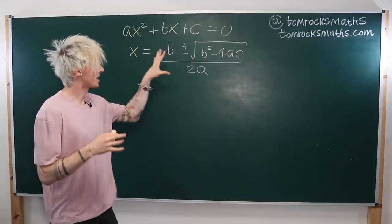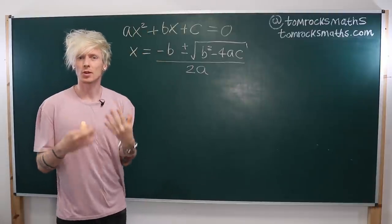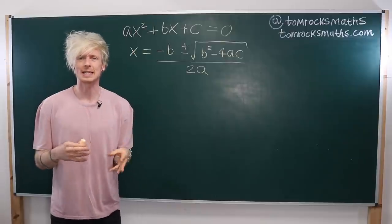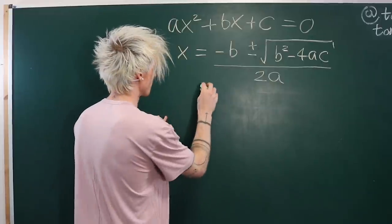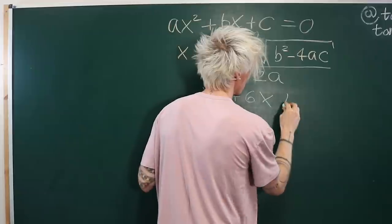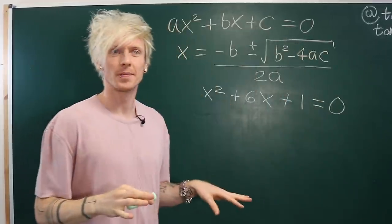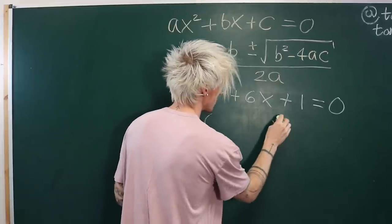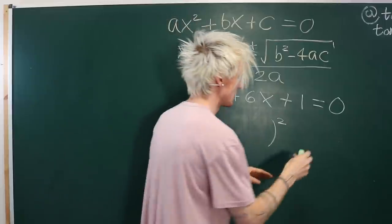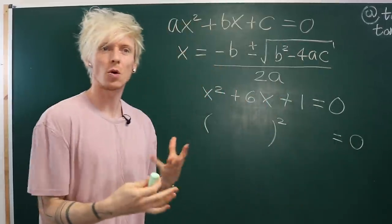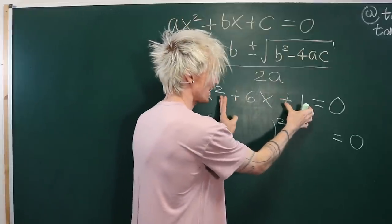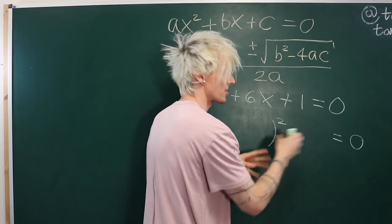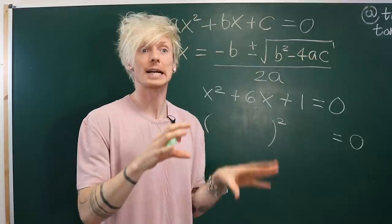But what we want to think about here is where this actually comes from. Can we derive this formula starting from a general quadratic equation? And the answer of course is yes! In order to do this we use a method called completing the square. The method requires us to write something squared plus or minus something equal to zero — you take your quadratic and write at least part of it as something squared, then rearrange and square root both sides to get the solution.